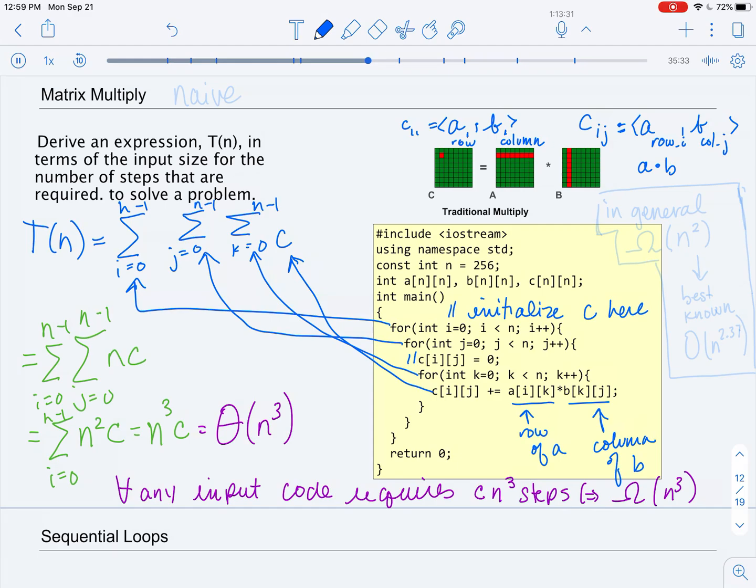Now, this is an interesting problem, because the code that we just traced, this is called the naive matrix multiplication algorithm. But we have shown that the naive algorithm takes theta of n cubed, big omega of n cubed, and big O of n cubed.